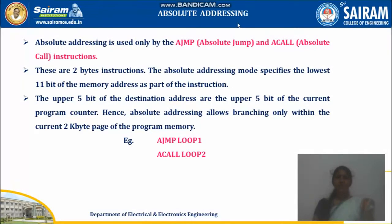Next is absolute addressing, which is used only by AJMP (absolute jump) and ACALL (absolute call). These are 2-byte instructions. This addressing mode is very specific: the lower 11 bits of the memory address are part of the instruction, and the upper 5 bits come from the current program counter. The program counter is a 16-bit register that stores the address of the next instruction to be executed.